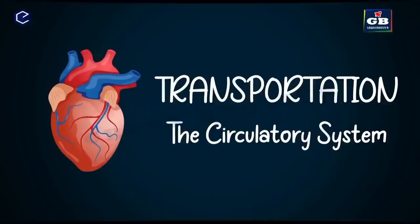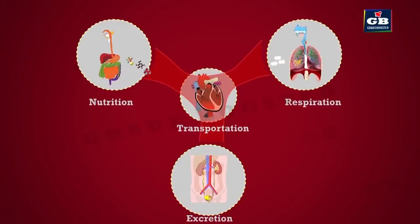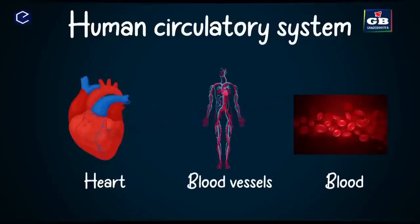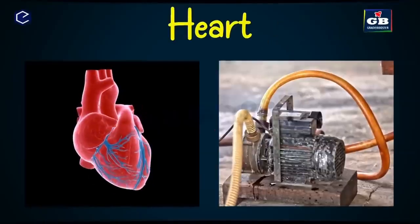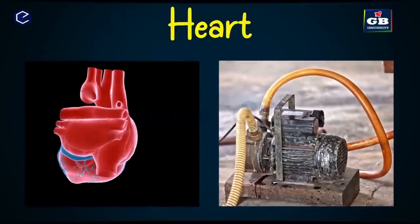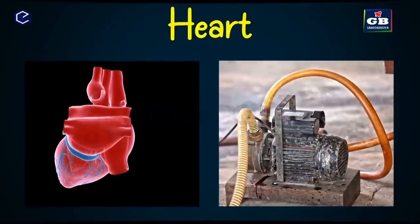Now let us look at the human transport system. Transportation is an important life process. Materials required for nutrition, respiration, and excretion are supplied by the transport system. The heart, blood, and blood vessels are the three important parts of the human transport system. Just like an electric motor pumps water in pipes, the heart pumps blood into the blood vessels.